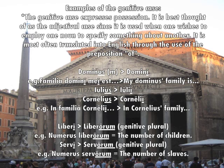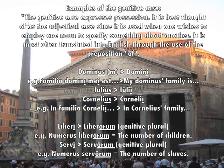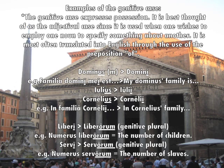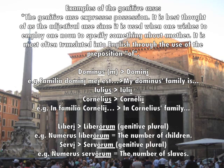We also saw two examples of the genitive plural. Liberi became liberorum, so numerus liberorum means 'the number of children.' Servi became servorum — numerus servorum means 'the number of slaves.'